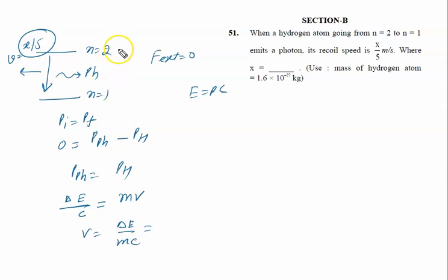What is the value of ΔE? The energy gap between n=1 and n=2 is 10.2 electron volts.